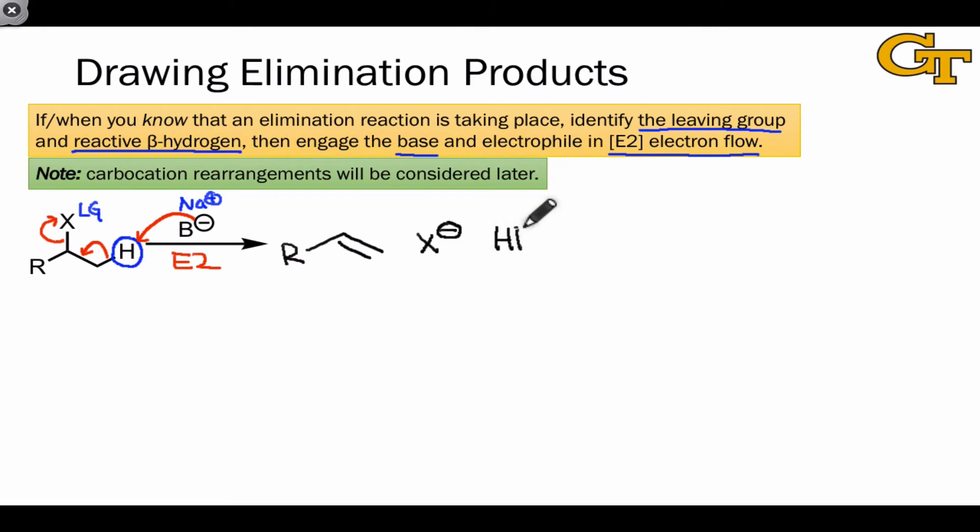We'll also have the conjugate acid of the base, which here, because the base began anionic, is the neutral conjugate acid, HB. Again though, the most important product here is the alkene. This is the organic product of a base-promoted elimination reaction.